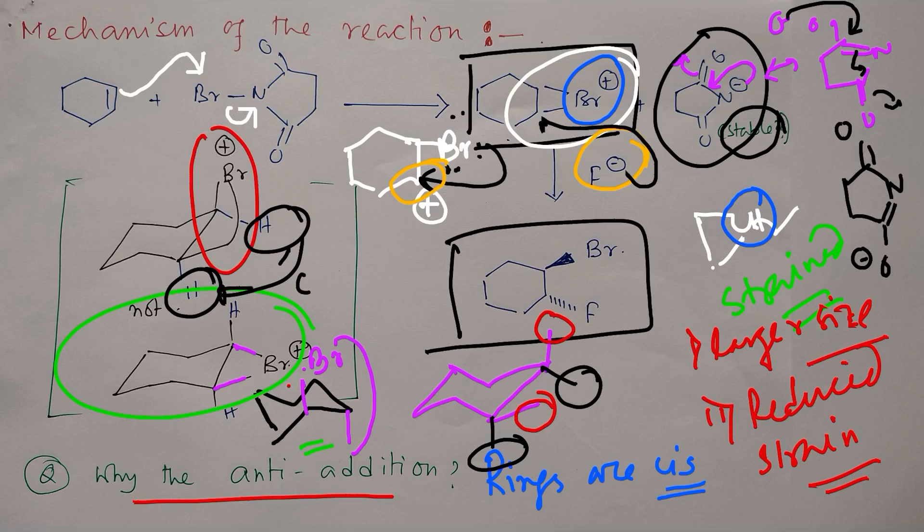Cis means same side. Similarly, these two sides are also cis in nature. This is the thing. Now in this way, another question: why anti?